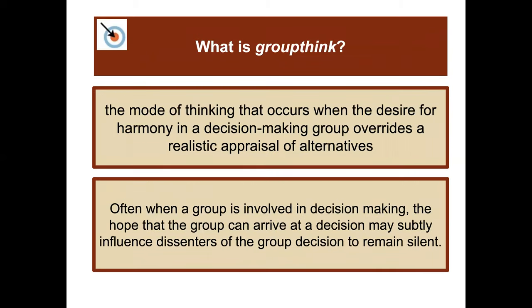Groupthink is the mode of thinking that occurs when the desire for harmony in a decision-making group overrides a realistic appraisal of alternatives. When a group is involved in decision-making, the hope of reaching consensus may subtly silence potential dissenters, who remain quiet because of this pressure.